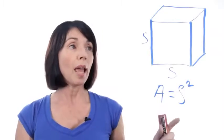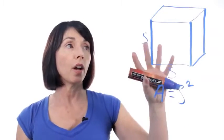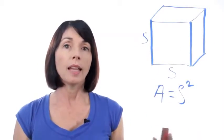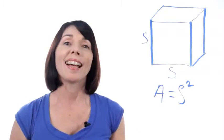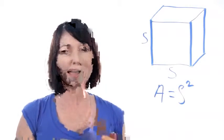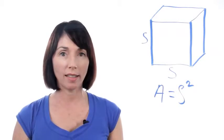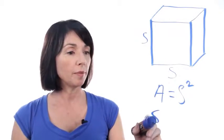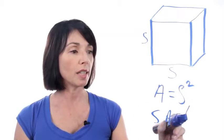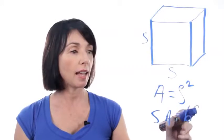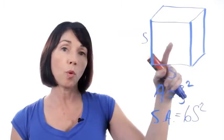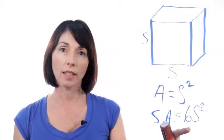To find the surface area, we have to find the area of all of the faces and add them all up. A box or a cube has six faces: front and back, top and bottom, and left and right. So the surface area is equal to 6s squared. S squared is the area of one face, and there are six faces.